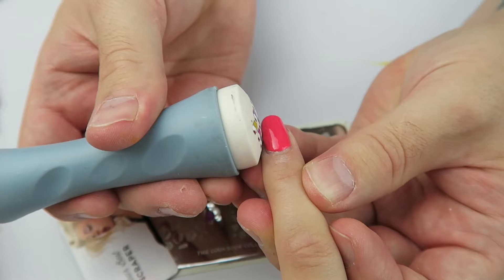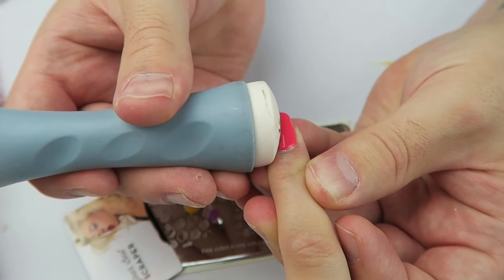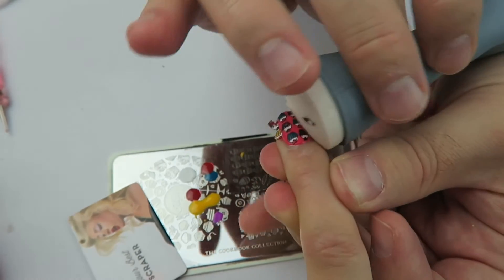Now we are going to be taking our stamp, make sure it is dry and then apply it to the nail and simply roll it over.